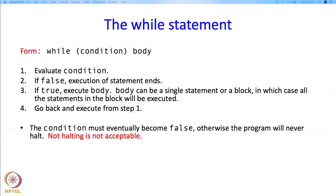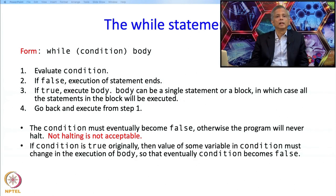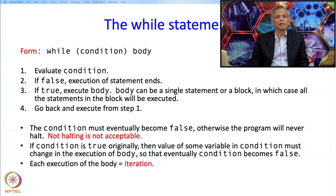The condition should become false in a well-written program, otherwise the program will not halt, which is not acceptable. We want programs to produce an answer and stop in finite time. This means that if the condition is true originally, the value of some variable appearing in the condition must change during execution of the body so that eventually the condition becomes false. Each execution of the body is called an iteration.